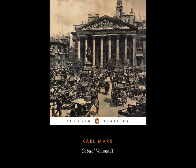The Circuit of Capital comprises three stages. As we have depicted them in Volume 1, these form the following series. First stage: the capitalist appears on the commodity and labor markets as a buyer. His money is transformed into commodities; it goes through the act of circulation M to C, money to commodity. Second stage: productive consumption by the capitalist of the commodities purchased. He functions as a capitalist producer of commodities. His capital passes through the production process. The result: commodities of greater value than their elements of production.